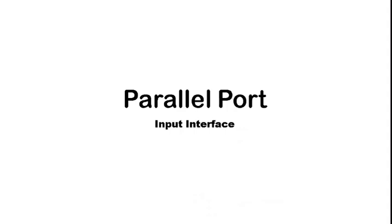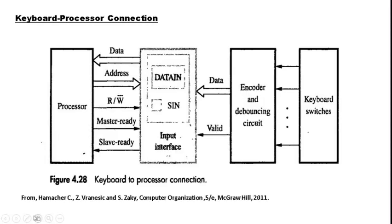We will see how an input interface works with a parallel port. A classic example is the keyboard. The switches of the keyboard, when pressed, produce electrical signals. Those electrical signals are converted to suitable digital representations by encoder and debouncing circuits. The encoder is the actual part converting these electrical signals to digital form, and the debouncing circuit is used to eliminate any debouncing effect from the keyboard.